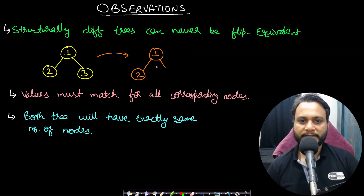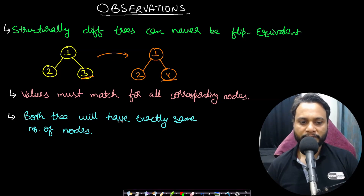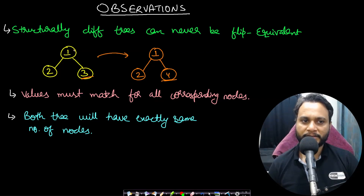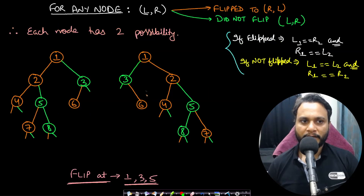The values must also match for all corresponding nodes. Even if both trees are structurally the same, if the values of corresponding nodes are not equal, they are not flip equivalent. Both trees must have exactly the same number of nodes, otherwise they are structurally never the same.